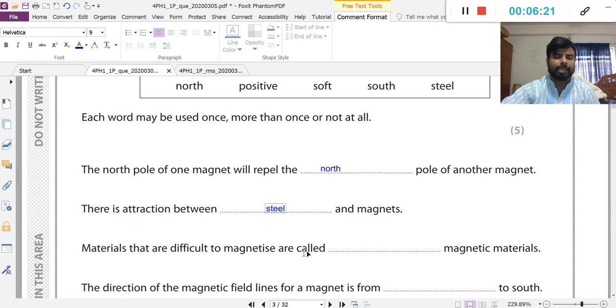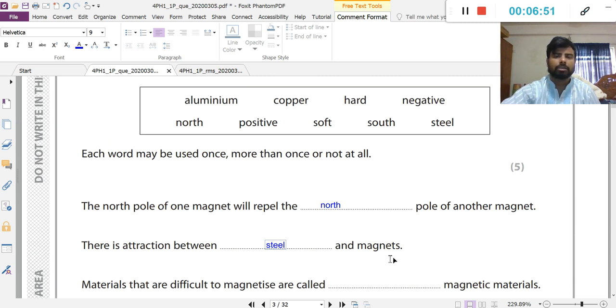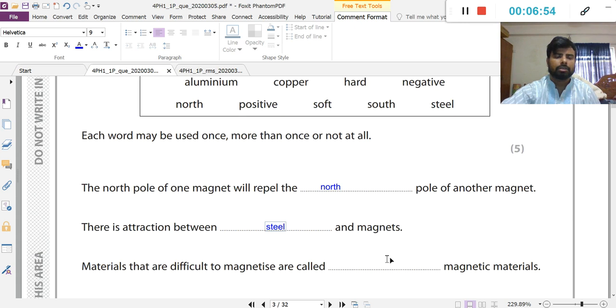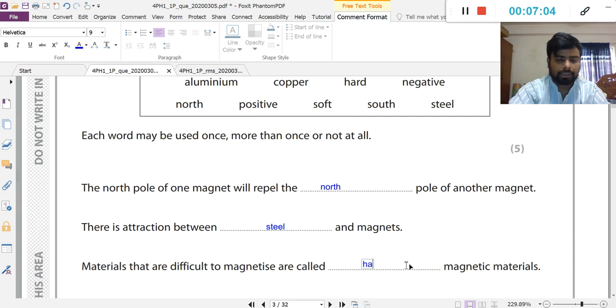Materials that are difficult to magnetize are called difficult. There are two types of magnetic material: one is soft magnetic material, another is hard magnetic material. Remember, the soft magnetic material is easy to magnetize and easy to demagnetize. But hard magnetic materials are difficult to magnetize and difficult to demagnetize. Materials that are difficult to magnetize are called hard magnetic material.